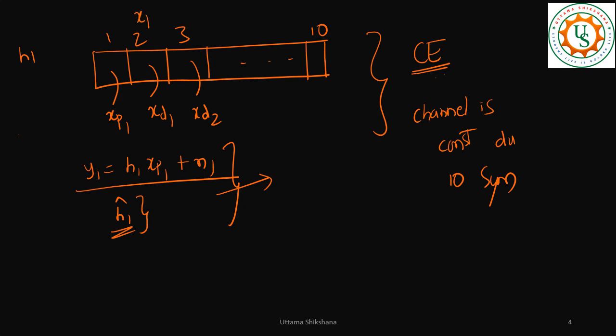Then in the second symbol also you try to transmit xp2. So y2 equals h1·xp2 plus n2. Remember the channel is constant and I have taken h1 only. In this case you have to divide by xp2.